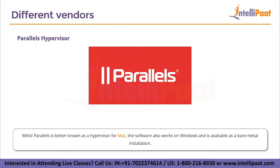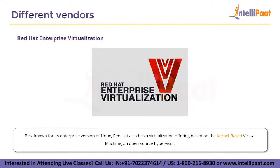Next is Parallels hypervisor, primarily known for Mac operating systems though it also works on Windows. It is available as a bare metal installation, making it a Type 1 hypervisor. Finally, we have Red Hat Enterprise Virtualization, best known for its enterprise Linux. Red Hat also has a virtualization offering based on the Kernel-based Virtual Machine (KVM), and it is an open source hypervisor, meaning anyone can make changes to the software and the source code is open to the public.